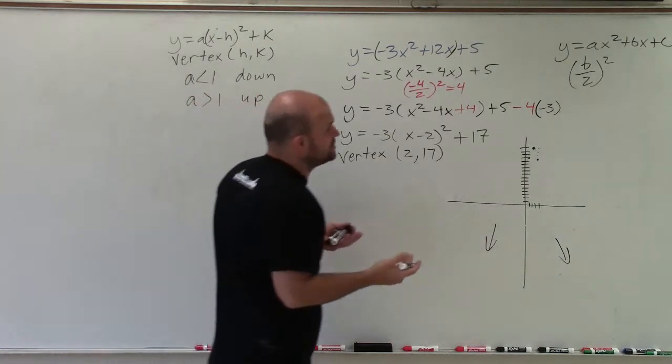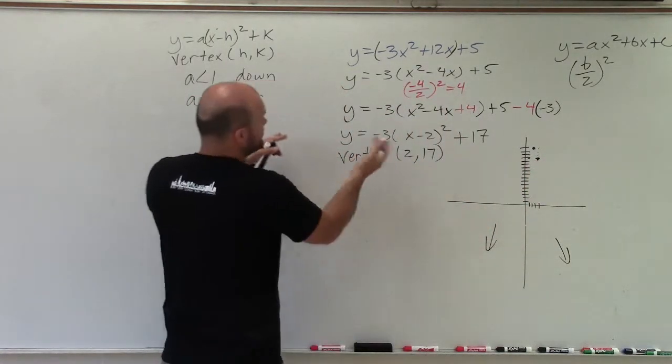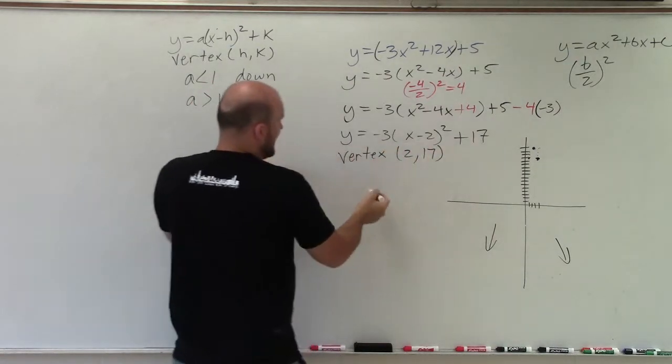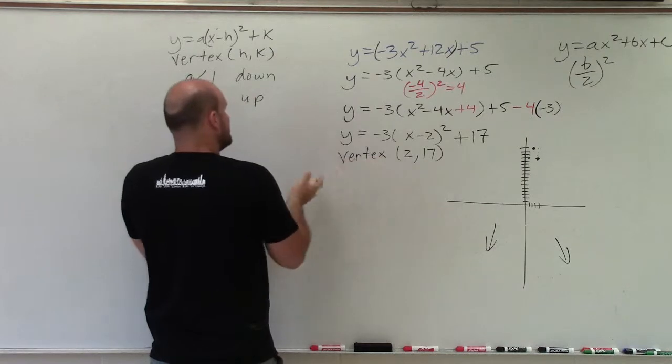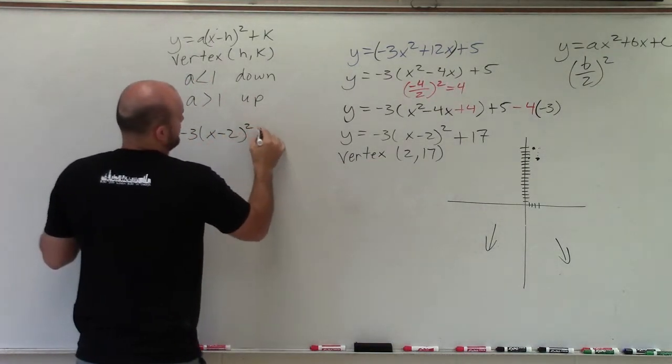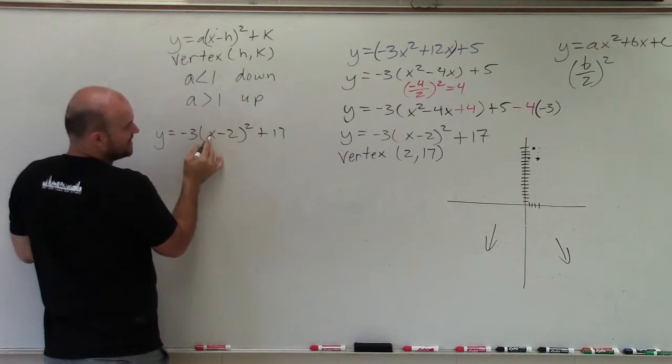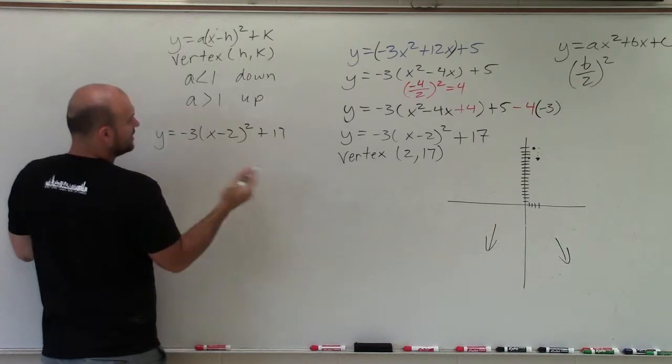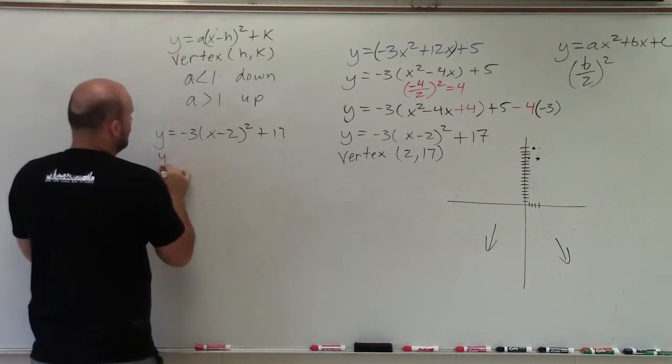And we could also just go ahead and check that by plugging in those values. So if you have, here's your equation, right? And we know that my line of symmetry is at 2. Well, then, let's just pick a value. Not 2, because we know that's going to give us our vertex, which is 17. Let's pick a value to the left and to the right. Let's say we pick the value 1.